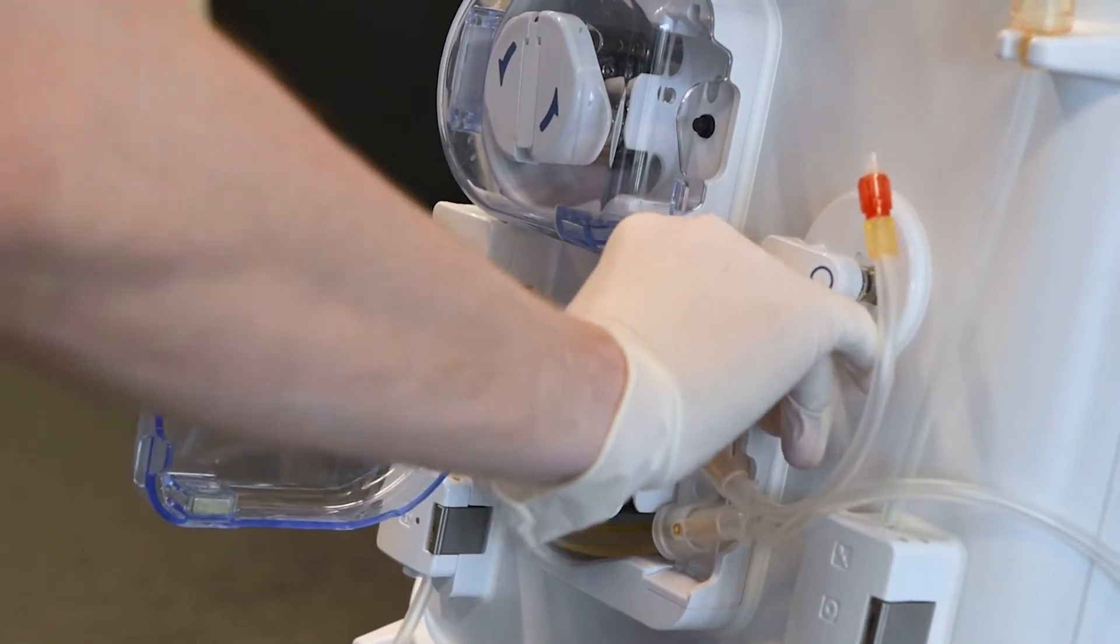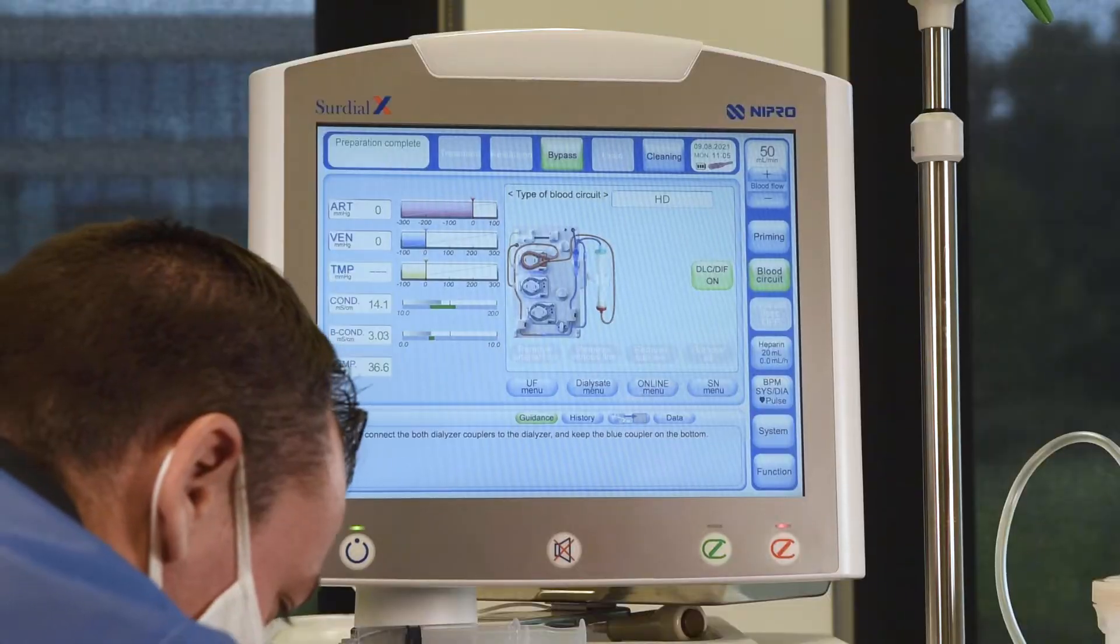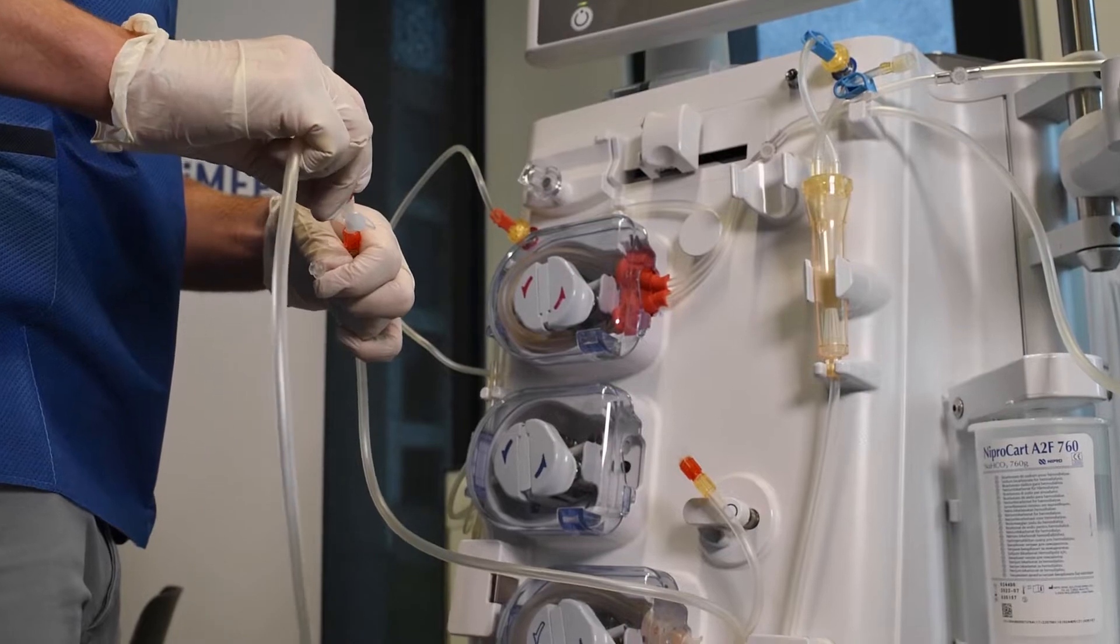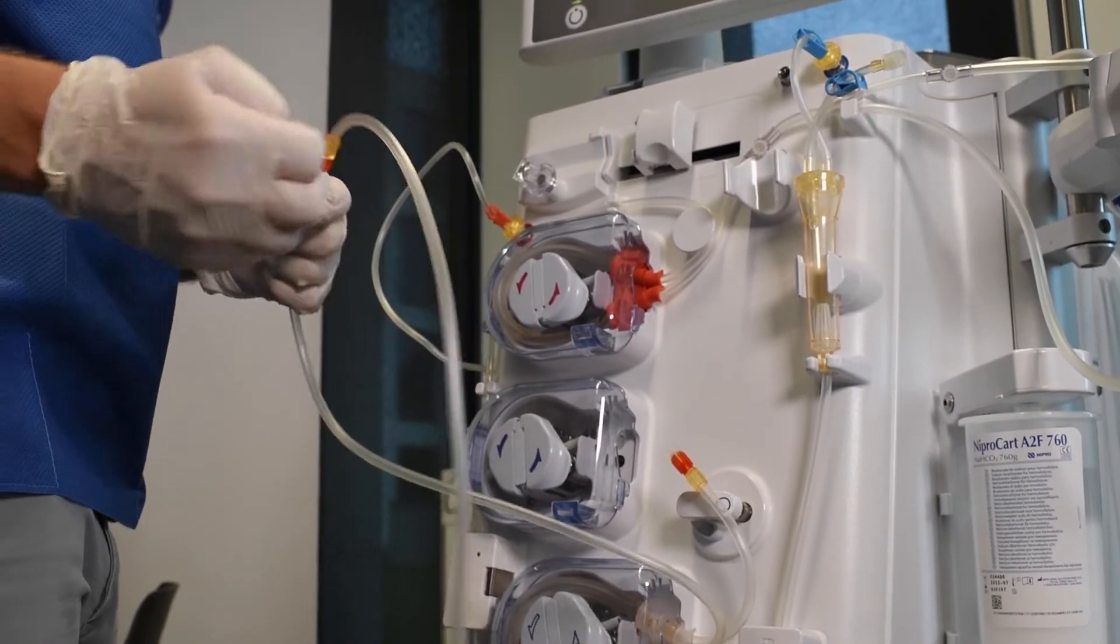Click the substitution pump segment into place. The screen will now change to show a HDF setup. Connect the arterial line with the longer substitution line.